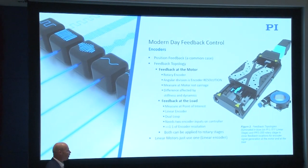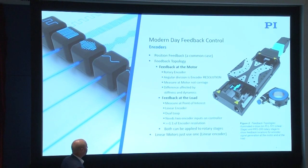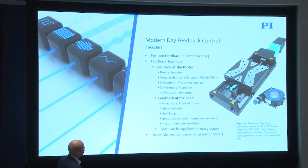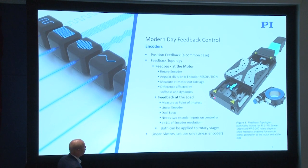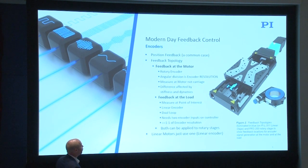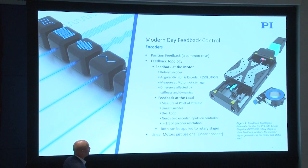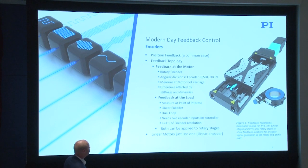Here's a very basic system using positional feedback. This is a motorized stage — you can see the carriage, bearing rails, and it's driven by a ball screw. In this case, we put feedback via a rotary encoder measuring the angular position of the motor. This is connected to the control system, and we drive the carriage back and forth.